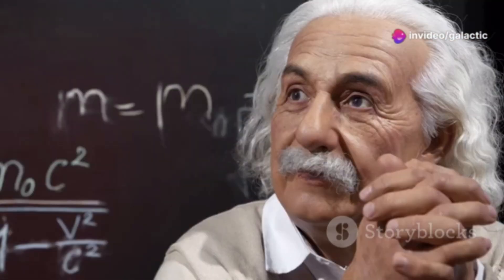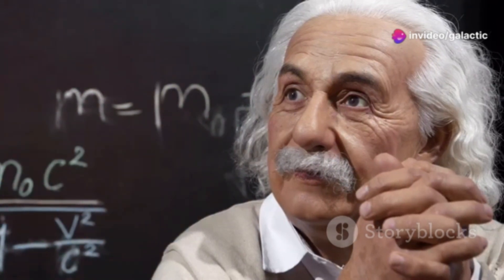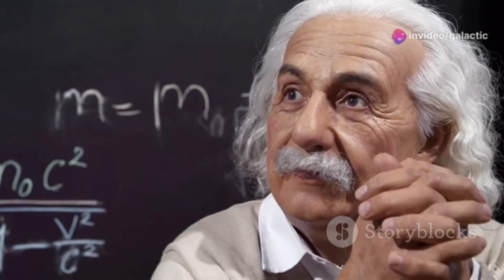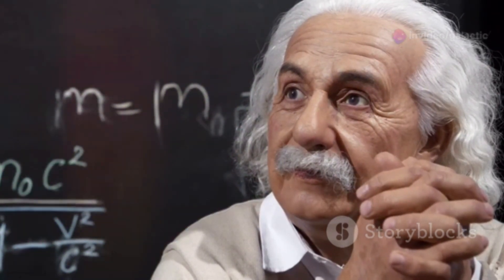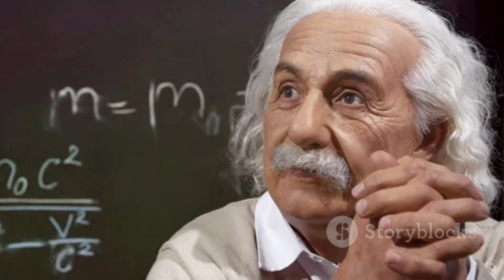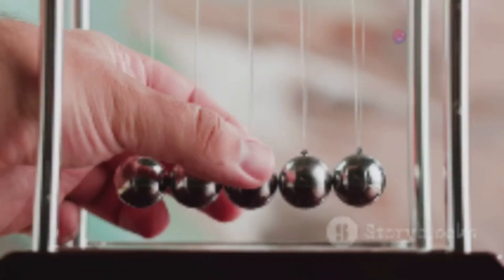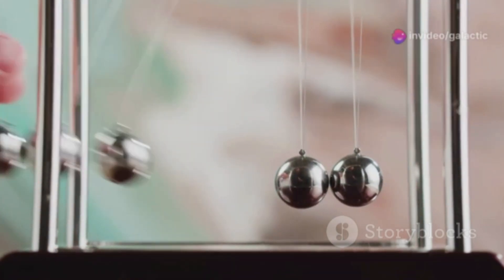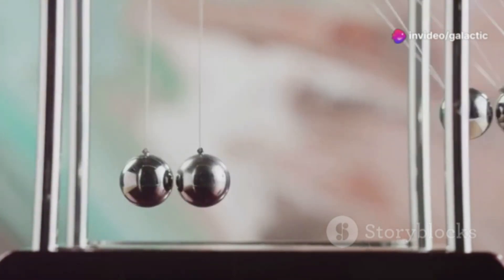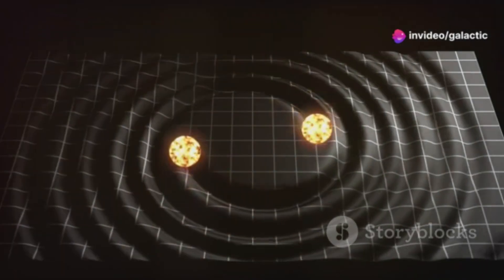General relativity, proposed by Einstein, describes gravity as the warping of space-time by massive objects. Picture a heavy ball placed on a trampoline — it creates a dip, and smaller balls roll towards it. This is how general relativity explains gravity.